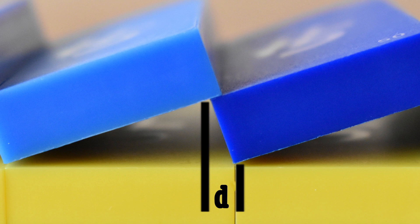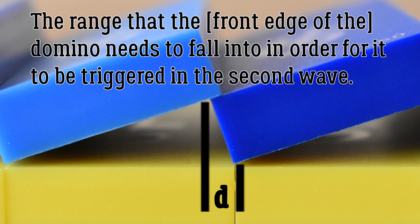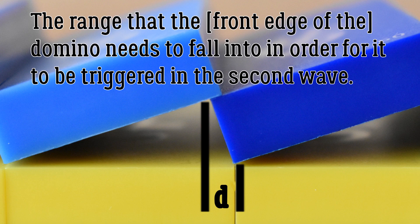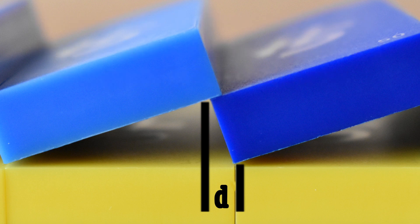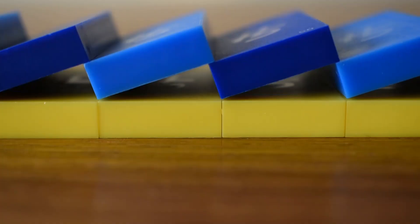But let's take this a step further. The larger this distance is, the more likely the trick is to work. Now we're getting into more of a chain reaction perspective. This overhanging distance is, theoretically, the range that the domino needs to fall into in order for it to be triggered in the second wave. Typically, if you can space the dominoes out so that if the first wave falls towards the back end of this overhanging distance, the trick will work.